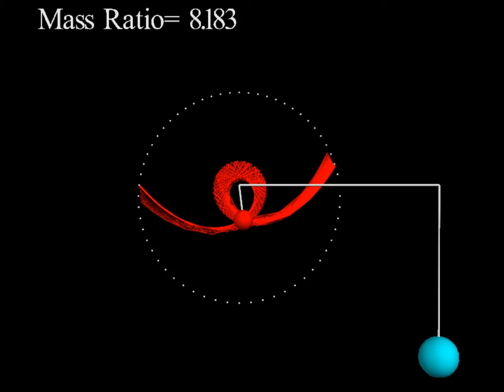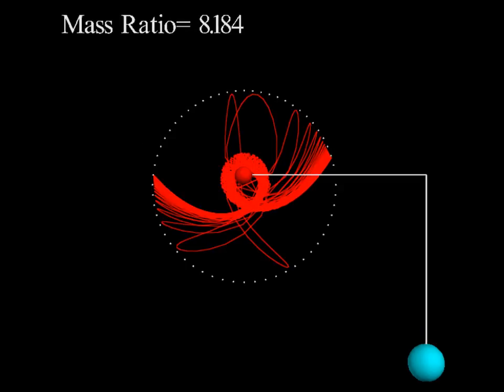The orbit for the mass ratio of five is cool to look at, but we want to see how the system behaves chaotically. What we want to look for are orbits that are very different from each other but have initial conditions that are quite similar. We see this happen around the mass ratio of 8.183. This orbit is fairly stable, but when we increase the mass ratio just by one thousandth of a unit to 8.184, we find a very different path of motion. And this exhibits chaotic behavior.